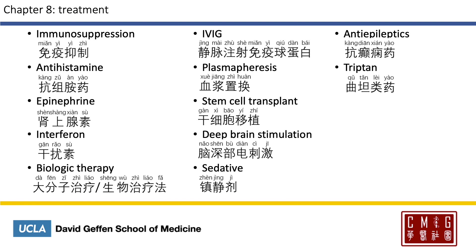For common treatments, immunosuppression is called 免疫抑制. Antihistamines are 抗组胺药, or commonly called 抗过敏药, meaning anti-allergens. Epinephrine is 肾上腺素. Interferon is 干扰素. Biologic therapy is either called 大分子治疗 or 生物治疗法. Intravenous immunoglobulin is 静脉注射免疫球蛋白; 免疫球蛋白 — immunoglobulin — is another name for 抗体.